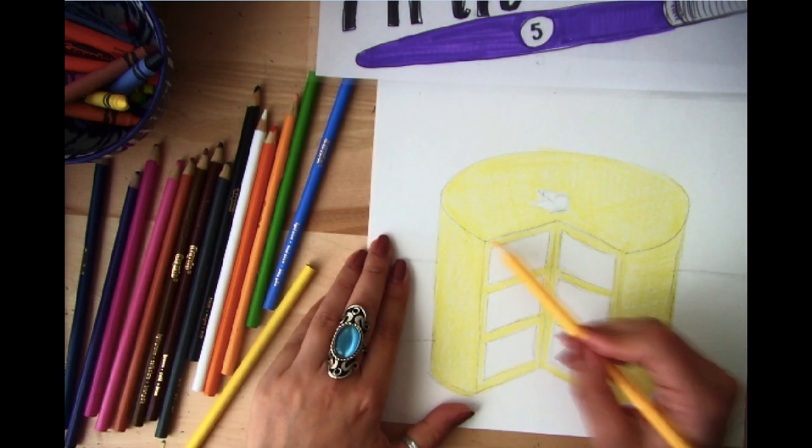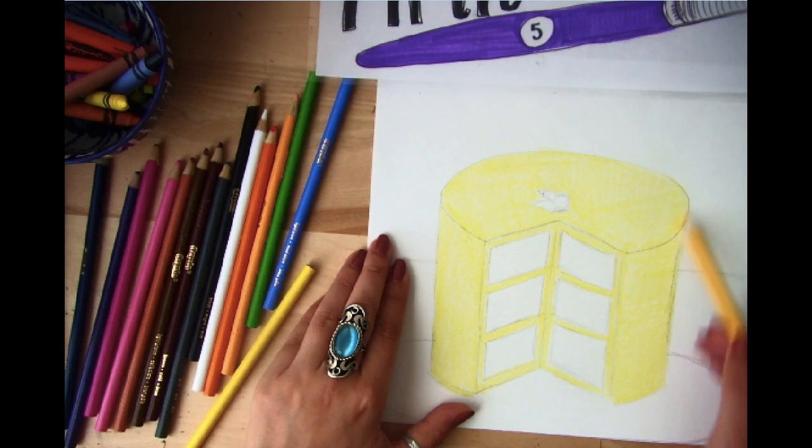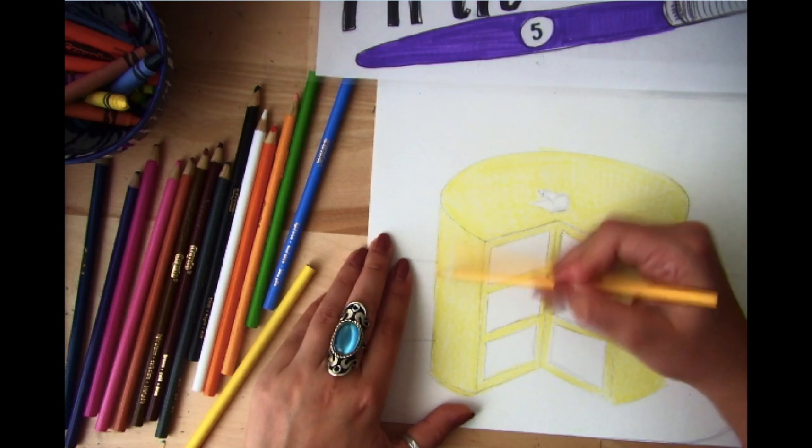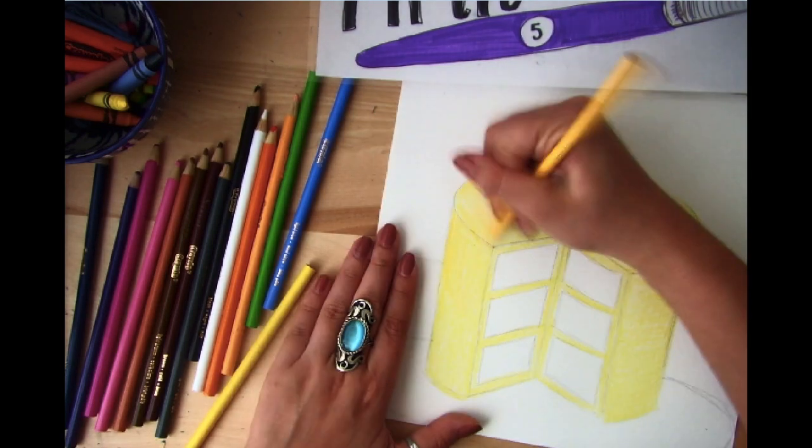Now the brightest part of my cake should be the top layer. So since I colored it in light yellow, I'm going to color the bottom part darker using my golden yellow.